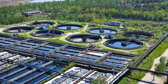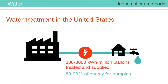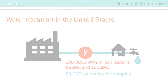In developed countries, water and energy use can be closely connected, especially if processes rely on industrial-era methods. For example, in the United States, every million gallons of treated water delivered requires 300 to 3,800 kilowatt hours of electric energy. 80 to 90 percent of this energy is used simply for pumping the water.